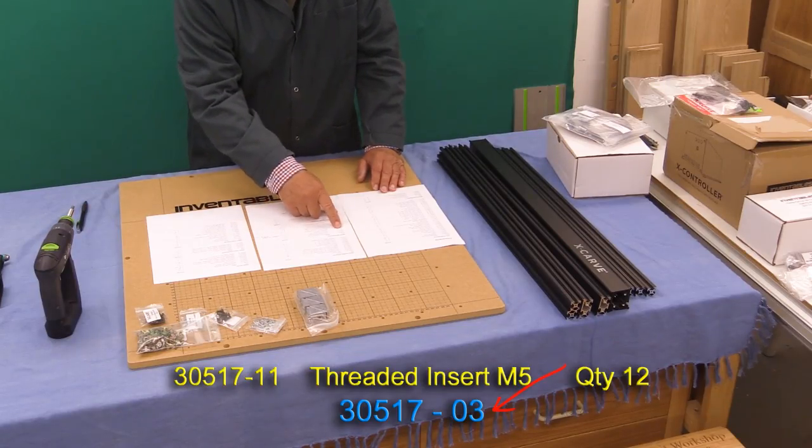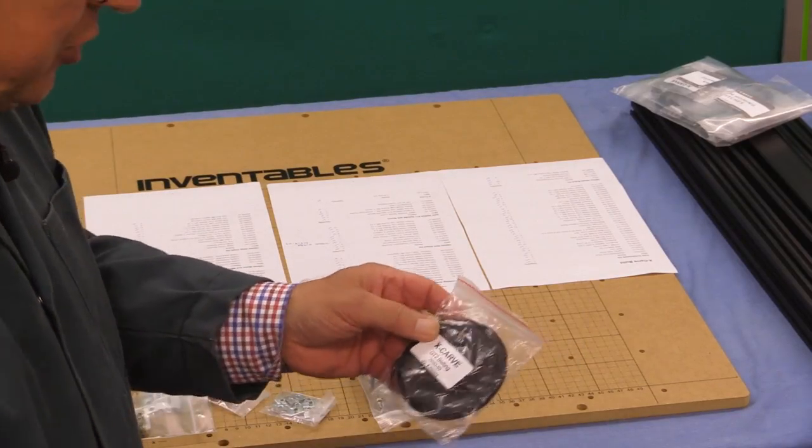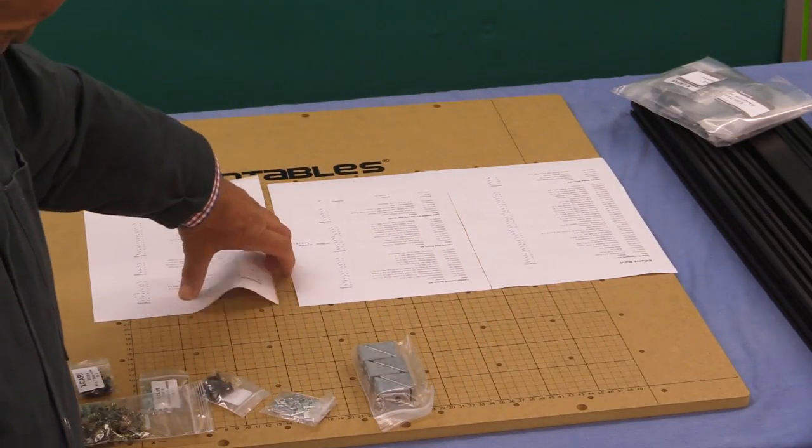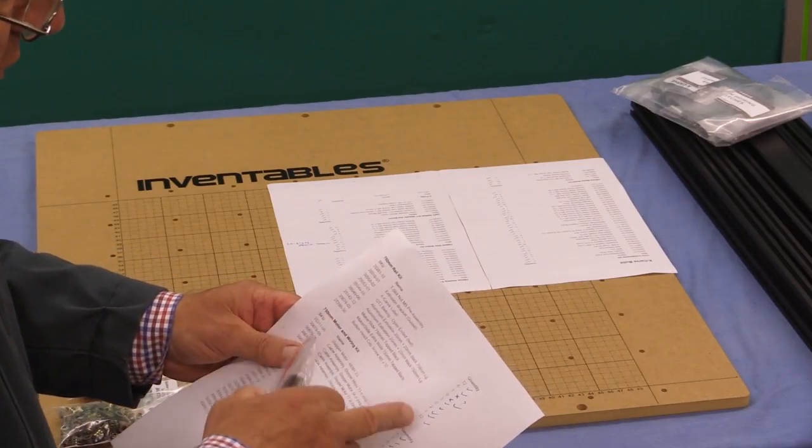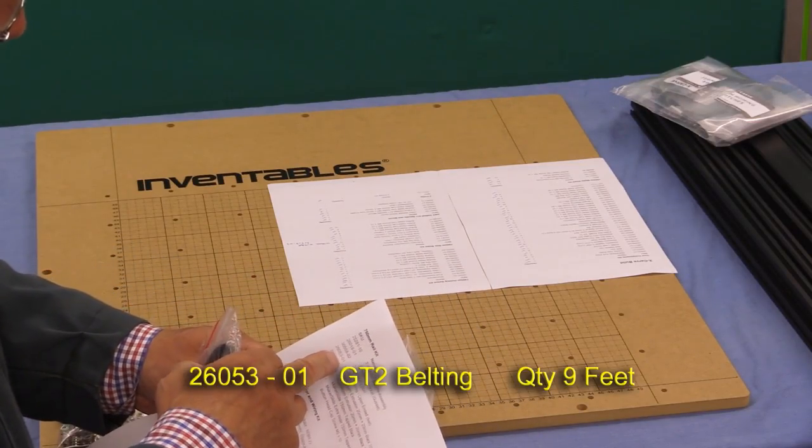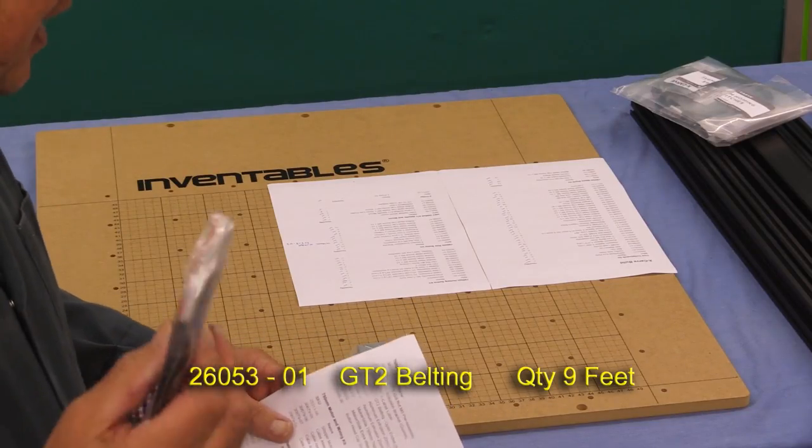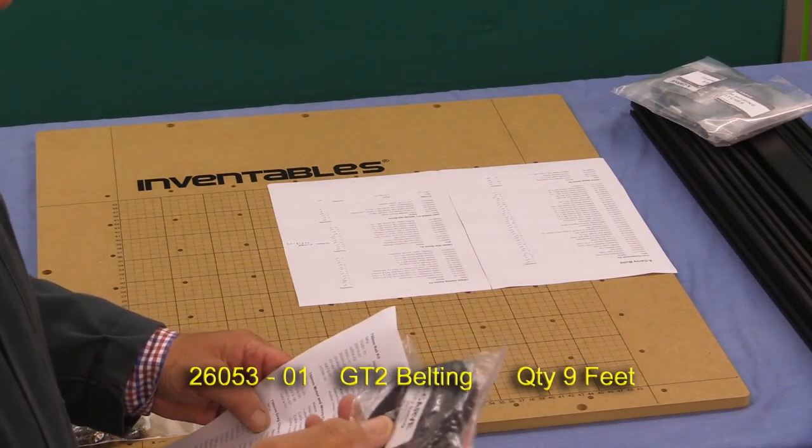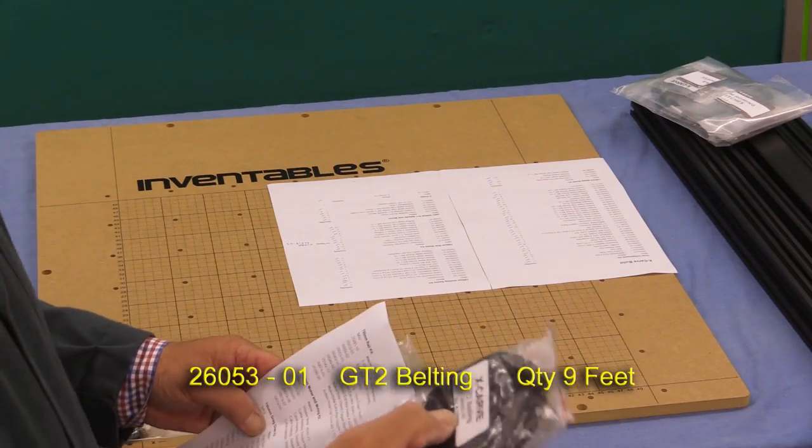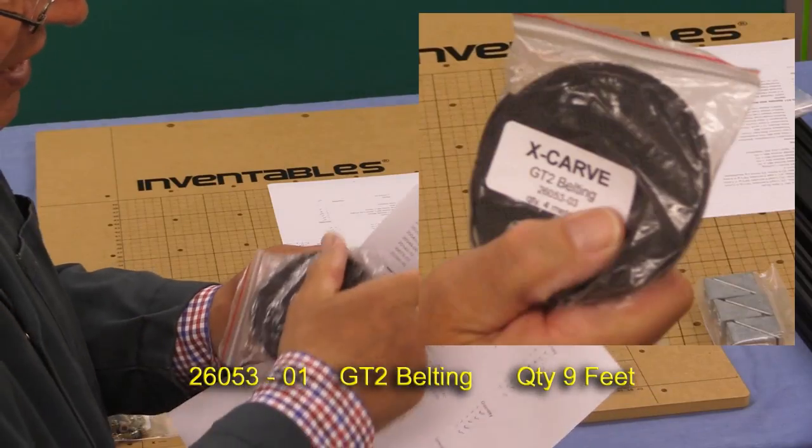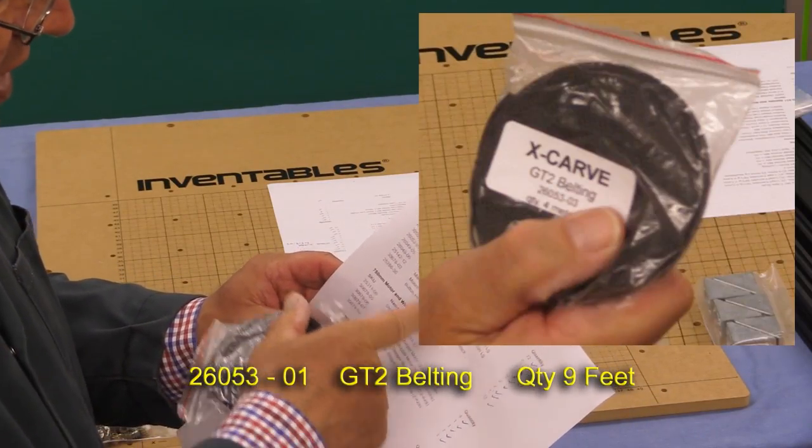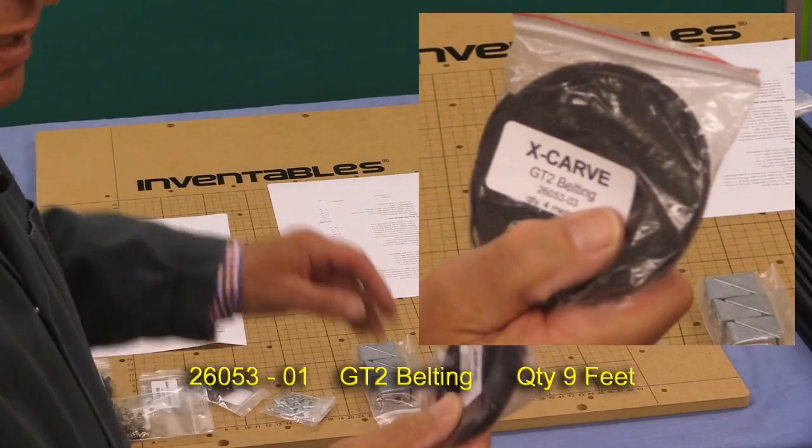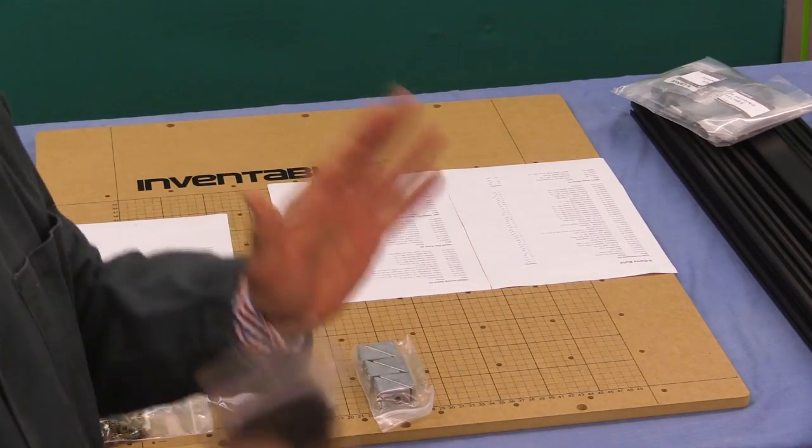That's just a question of the number being quoted incorrectly I think. Now the only item I struggled to find initially was the GT2 belting because the part number which was in the 750 millimeter rail kit, 26053-01, I couldn't find it. Then I looked in the core components and found this with a different part number, but it is GT2 belting. The reason is that this is four meters, and in the list for the 750 millimeter rail kit it says look for a nine foot length. So I think what's happened is a four meter length maybe for the European market has been swapped out. So I found it, no problem, everything is there.